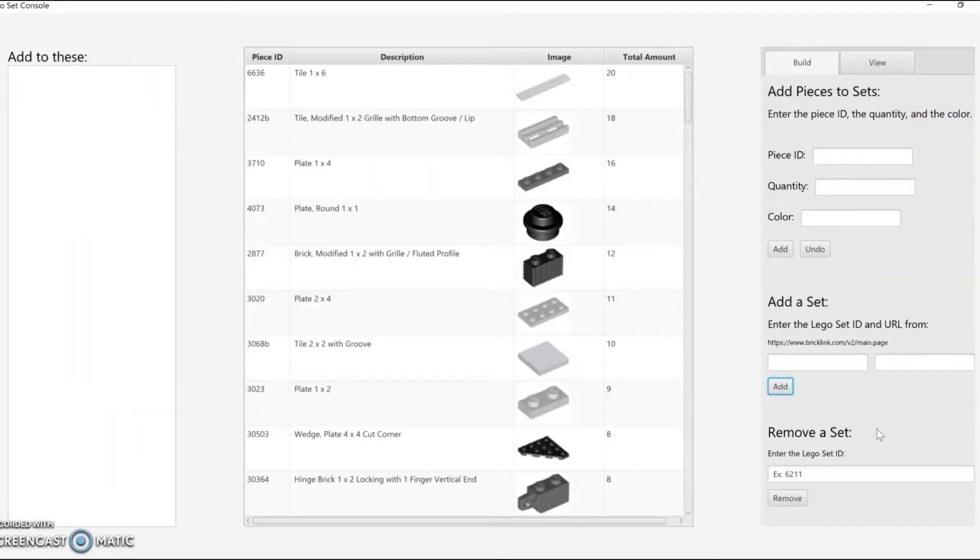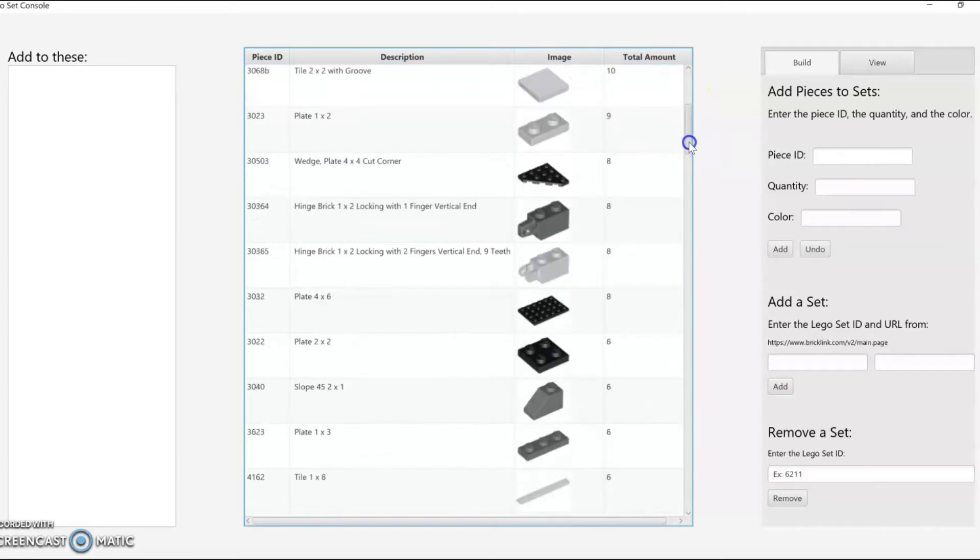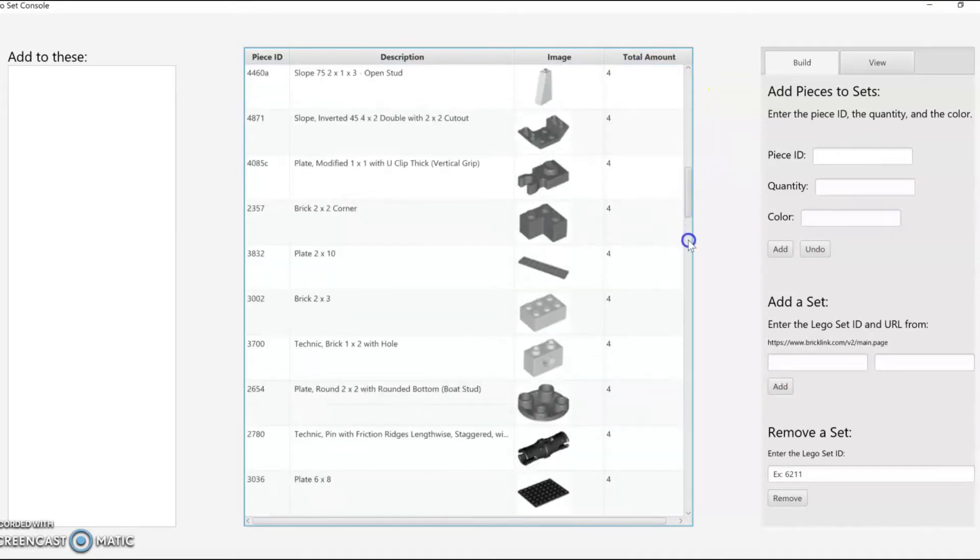After a number of sets have been entered, the master list is populated with the piece ID, description, and image of the piece, and the total count needed. This list is sorted by the total count so that the most common pieces will be at the top and the more unique and rare pieces will be at the bottom.